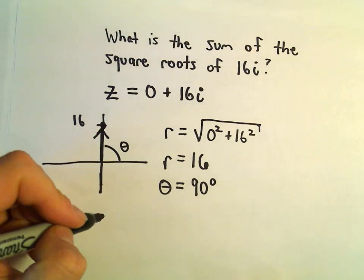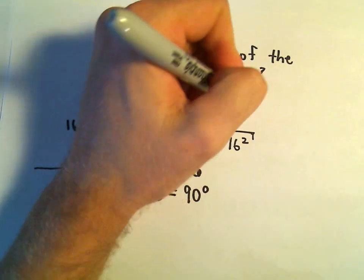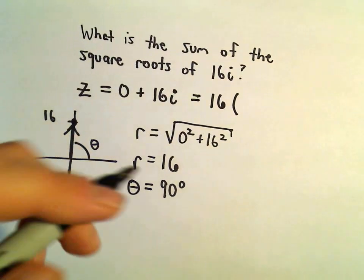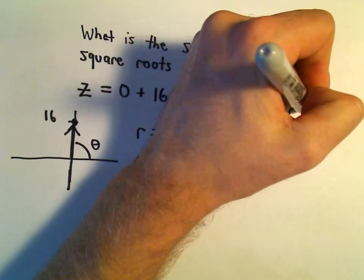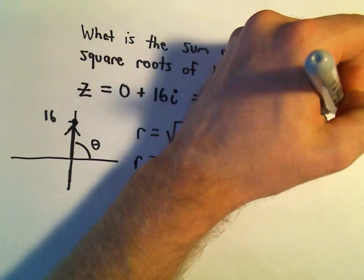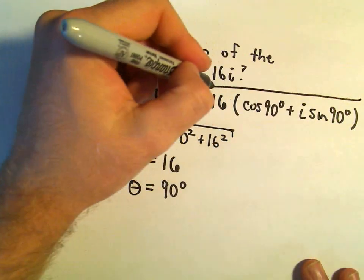So it says we can rewrite our complex number 0 plus 16i. It says we can write that as 16 times the quantity cosine of 90 degrees plus i sine of 90 degrees. Okay, so this is kind of step one.